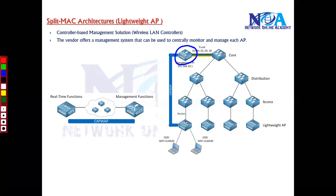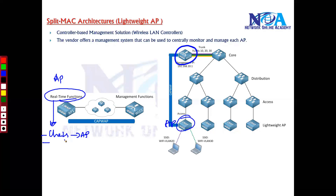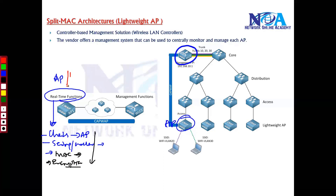All access points will handle the real-time functions. The access point will still be forwarding and will be the point of contact for client users, so all clients connect to the access points. The access point is responsible for sending and receiving wireless signals — messages called beacons or probe messages — used to connect clients. Each client is identified based on MAC address, just like MAC-based forwarding in a switch. If there is any encryption, the access point handles that as well. These are the real-time functions.